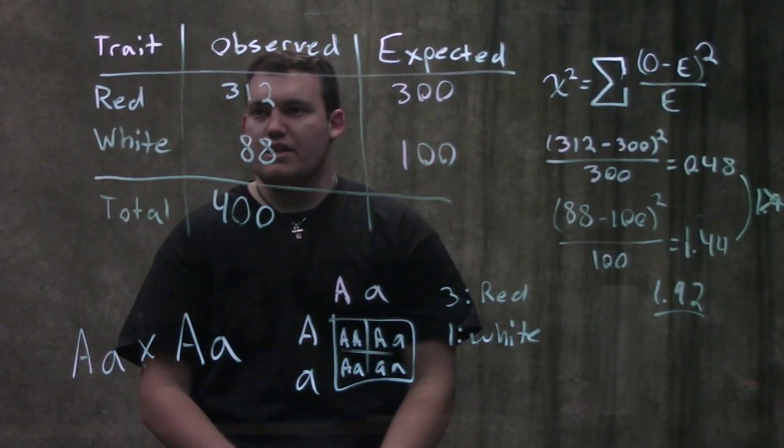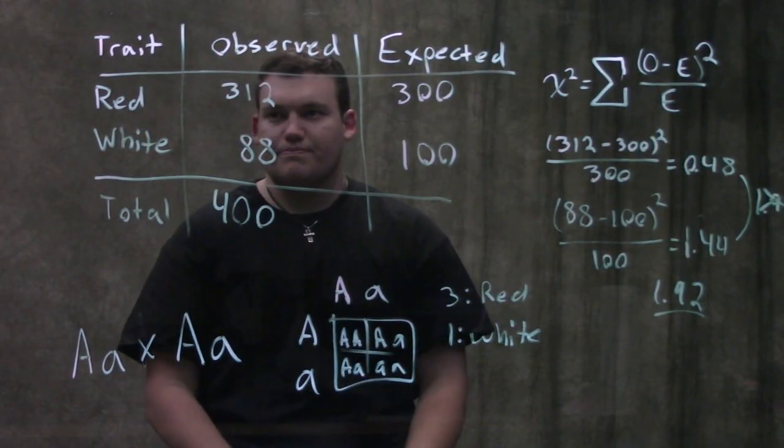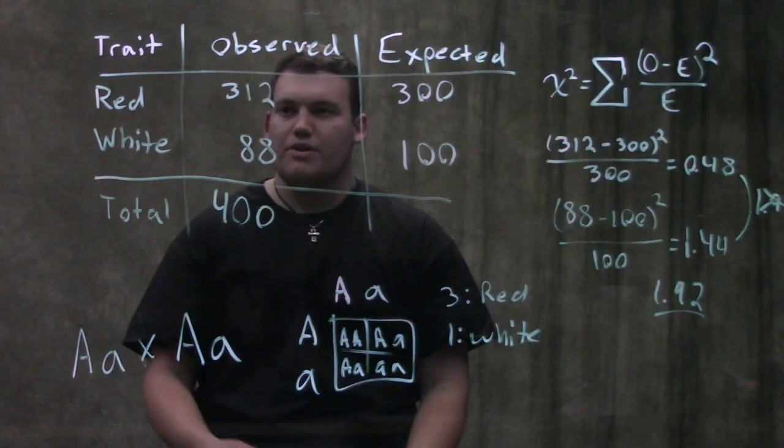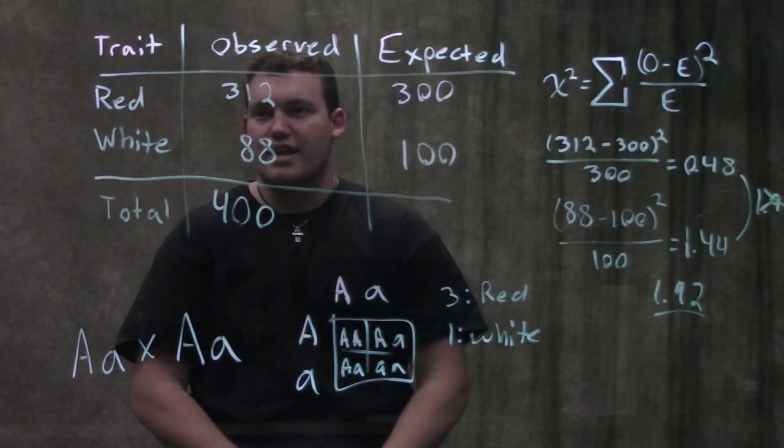That doesn't tell us everything we need to know. One thing I do want to point out here, see how this says chi-squared? The square doesn't mean anything. I don't want you to take the square root of this to find chi. Chi doesn't exist in genetics world.